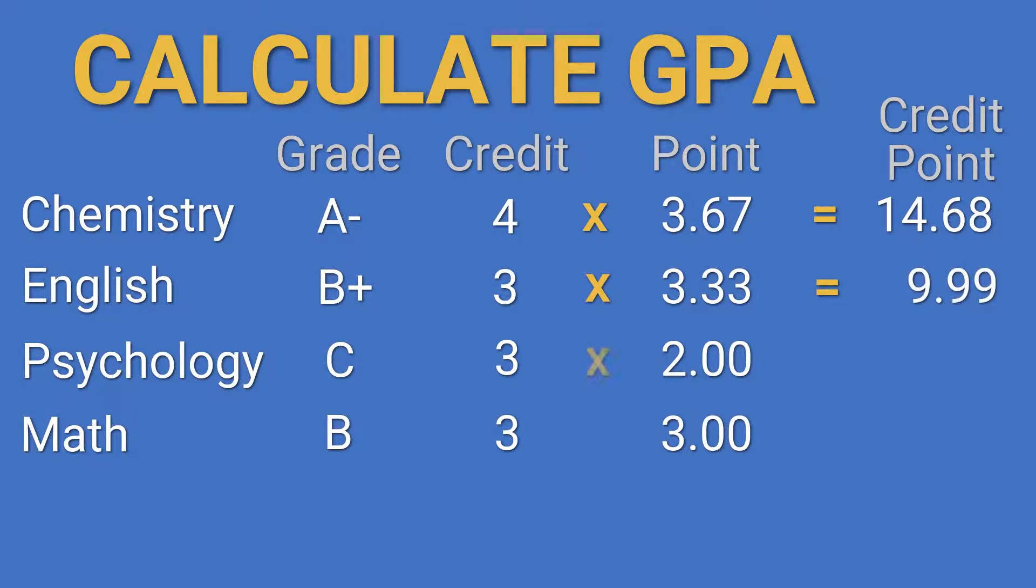Repeat the same calculations. For Psychology, it's 6.00 and Math, it's 9.00. Add up all the credit points, that's 39.67.